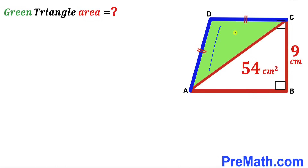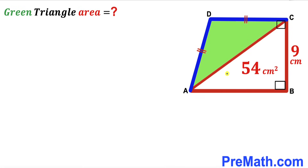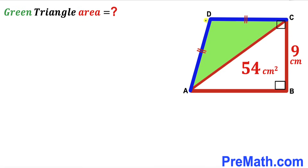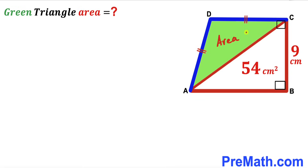Welcome to PreMath. In this video we have trapezoid ABCD consisting of two triangles: the right triangle ABC and the green shaded triangle ACD. The area of triangle ABC is 54 cm², its side BC is 9 cm, side AD equals side CD, and the marked angles are 90 degrees. Our task is to calculate the area of the green shaded triangle ACD.